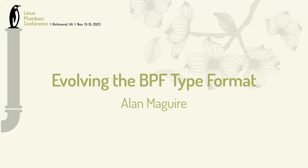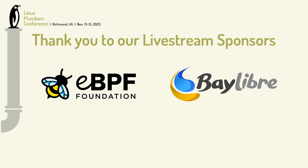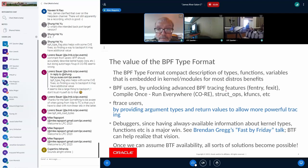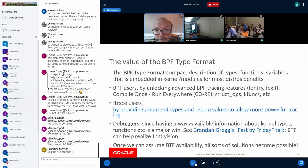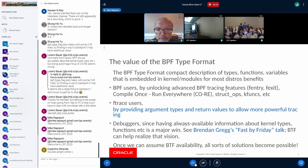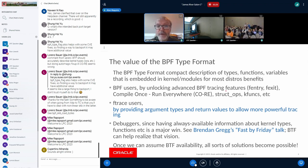My name's Alan McGuire, and I'm here to talk about evolving the BPF type format. BTF is a compact description of types, functions, and variables. It's embedded in the kernel and modules, and it's in most distributions these days. For modern BPF, it has really become central and vital for modern tracing, f-entry, f-exit, compile-once-run-everywhere, struct-ops, and kfuncs — most of the modern BPF functionality.